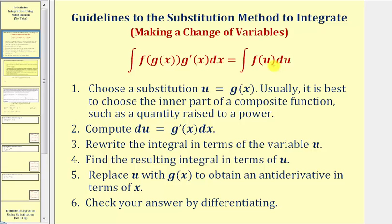Here are the steps we'll follow. Step one: choose a substitution u equals g of x — usually it is best to choose the inner part of the composite function, such as a quantity raised to a power. Step two: compute the differential du, where du equals g prime of x times dx. Step three: write the integral in terms of the variable u.